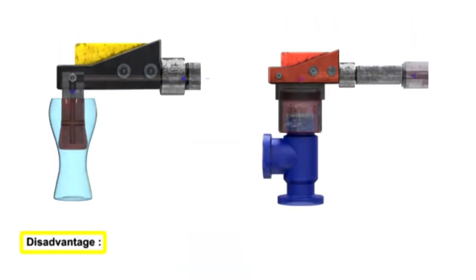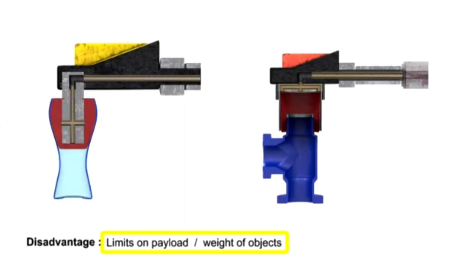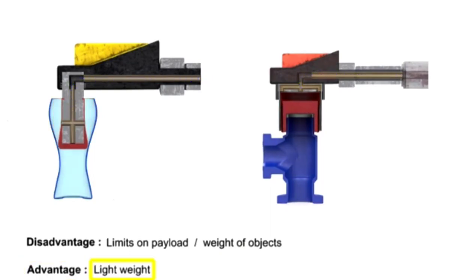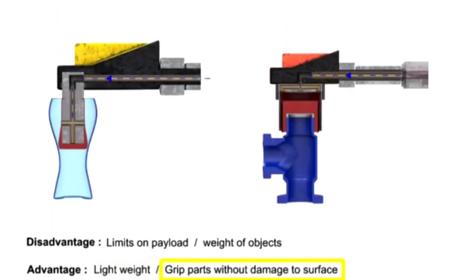The single disadvantage of these pneumatic lifting devices are the limits on the payload or weight which they can lift. However, these flexible pneumatic devices have many advantages, including their light weight, their ability to grip parts without damaging surfaces, and their ability to grip parts with irregular shapes.